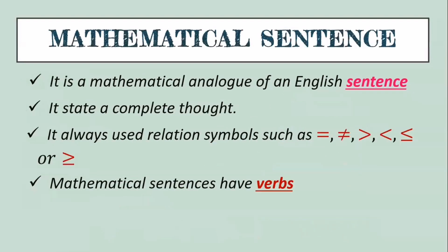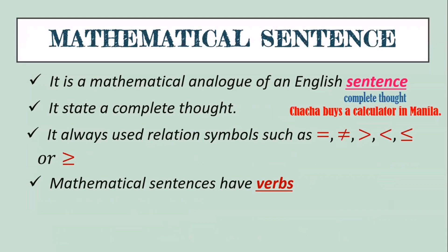Now, what is a mathematical sentence? What's the difference between a mathematical expression and a mathematical sentence? A mathematical sentence is a mathematical analog of an English sentence. When we say sentence, it should be a complete thought — for example, 'Cha-cha buys a calculator in Manila,' which has a complete thought with a subject and predicate. In a mathematical sentence, it also states a complete thought, and it always uses a relation symbol such as equal, not equal, greater than, less than, less than or equal, or greater than or equal.